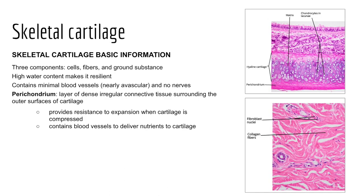Recall from last week's lecture, cartilage is one of the connective tissues found in our body, along with blood, bone, and connective tissue proper. Connective tissue is made up of three components: cells — in cartilage, these are chondrocytes, the mature cells responsible for maintenance; fibers — predominantly elastic and collagen fibers; and ground substance, the gel-like substance filling spaces between cells and fibers. A helpful phrase to remember: cells, gels, and fibers — with gels being the ground substance.